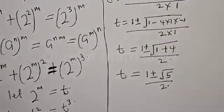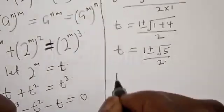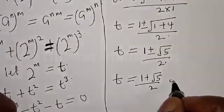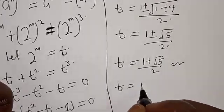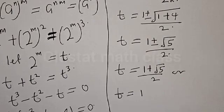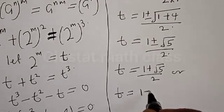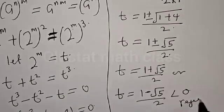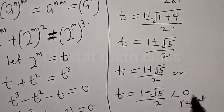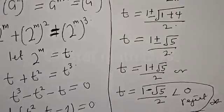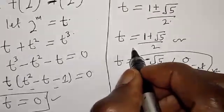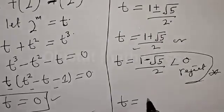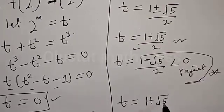So t equals 1 plus square root of 5 over 2, or t equals 1 minus square root of 5 over 2. The second solution is less than zero, so we reject it. Therefore the real root is t equals 1 plus square root of 5 over 2.